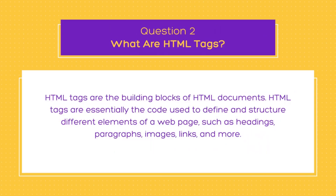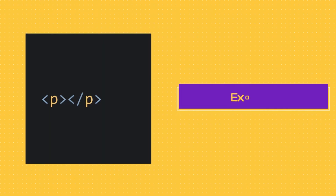The next question in this series is: what are tags? HTML tags are the building blocks of HTML documents. They are essentially the code used to define and structure different elements of a web page such as headings, paragraphs, images, and links. HTML tags are enclosed in angle brackets and usually come in pairs — an opening tag and a closing tag — with the content between them.